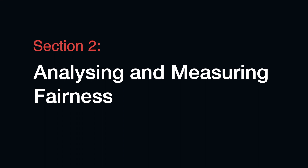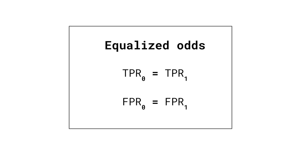Much of algorithm fairness research aims at developing methods to analyze and measure unfairness. This can involve analyzing data for the potential reasons of unfairness just mentioned, as well as measuring unfairness in model predictions. We can measure fairness by applying different definitions of fairness. Most of these involve splitting the population into a privileged and unprivileged group and comparing them using different evaluation metrics. For example, under the equalized odds definition, we require the true positive rates and false positive rates of the two groups to be equal.